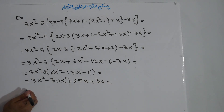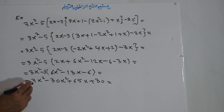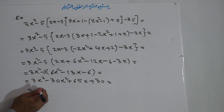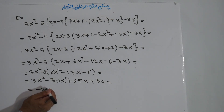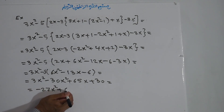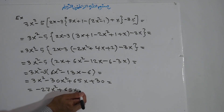Now it equals — we simplify and collect like terms: 3x² minus 30x² gives negative 27x²; plus 65x; minus 3x gives plus 62x... and plus 30 minus 30 cancels. The simplified result is negative 27x² plus 65x plus 30.